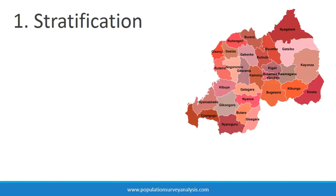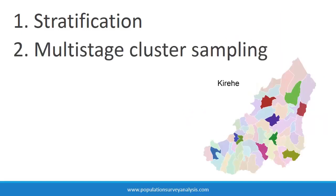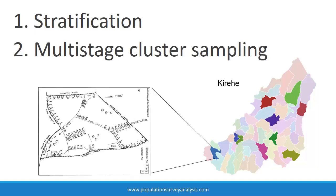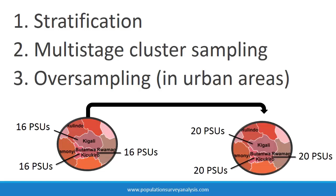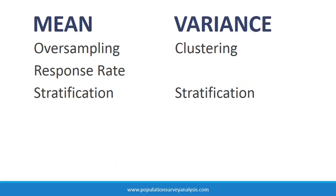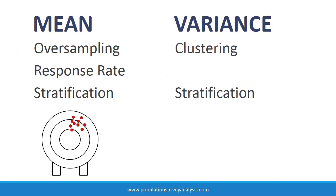Most national household surveys have three complex sampling design characteristics. One, stratification, choosing an independent sample in subnational geographic areas. Two, multi-stage cluster sampling — first sampling communities, then sampling households, and sometimes sampling individuals within households. Three, oversampling, ensuring there are a sufficient number of rural and urban households to estimate national indicators. Together, these design characteristics bias the mean estimates and introduce variance, which is why we have to account for complex sample design when performing survey data analysis.